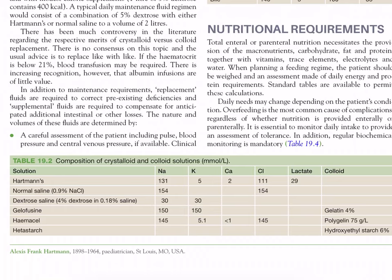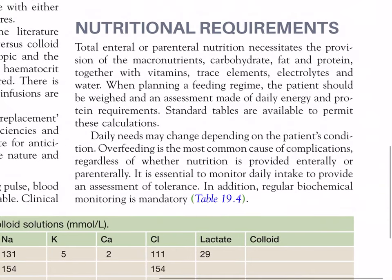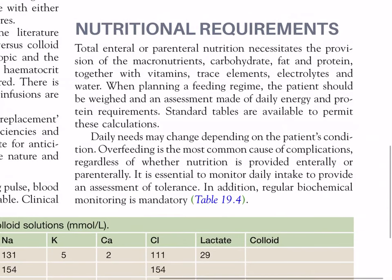Nutritional requirements: total enteral or parenteral nutrition necessitates the provision of the macronutrients — carbohydrate, fat, and protein — together with vitamins, trace elements, electrolytes, and water. When planning a feeding regimen, the patient should be weighed and an assessment made of daily energy and protein requirements.